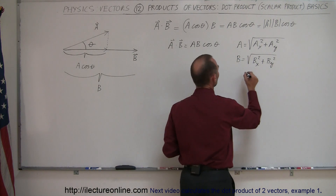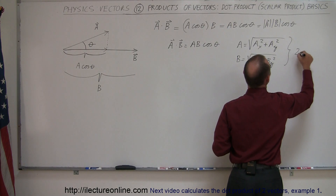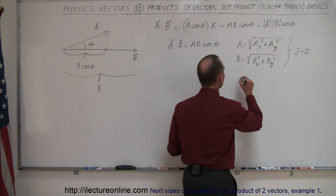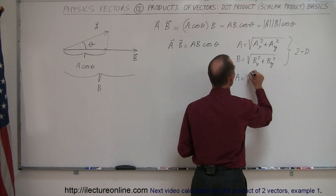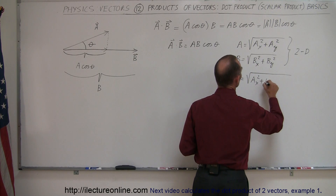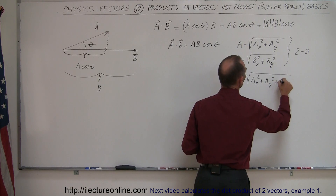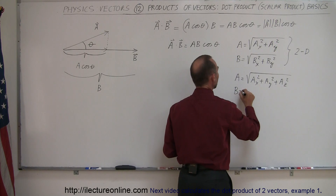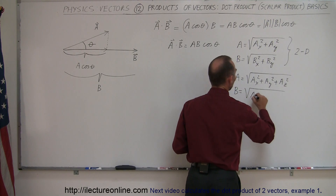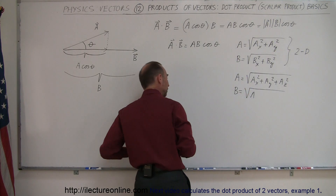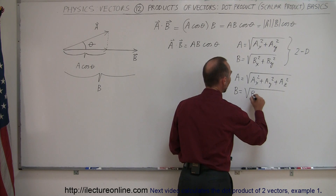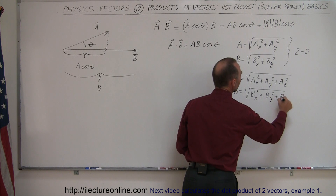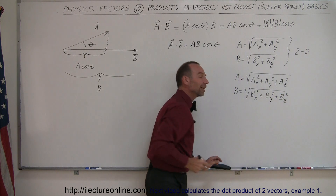That was in 2D. For three-dimensional vectors, the magnitude of A is the square root of the x-component squared plus the y-component squared plus the z-component squared. And for B, it would be the square root of Bx squared plus By squared plus Bz squared.